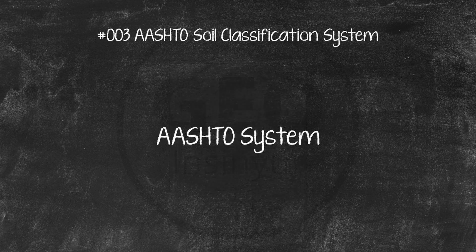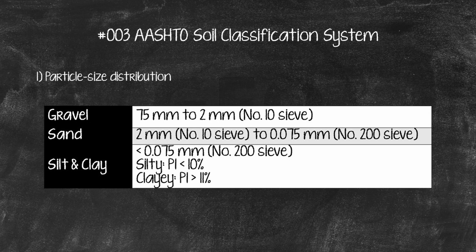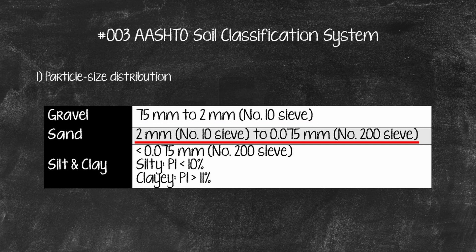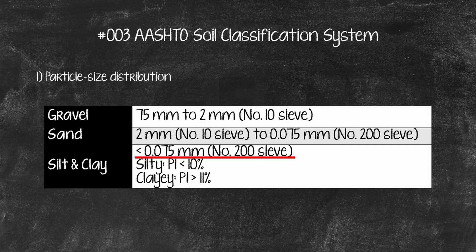The AASHTO System is based on the following three soil properties. 1. Particle Size Distribution. Gravel, fraction passing the 75mm sieve and retained on number 10, 2mm U.S. sieve. Sand, fraction passing the number 10, 2mm U.S. sieve and retained on the number 200, 0.075mm U.S. sieve. Silt and Clay, fraction passing the number 200 U.S. sieve.